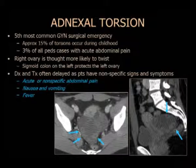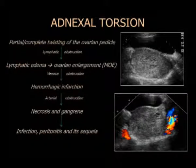Pasaremos ahora a la torsión. Lamentablemente es la quinta emergencia en ginecología. El problema es que se retrasa la presentación clínica, hay retraso en el diagnóstico radiológico, y frecuentemente ya hay un infarto cuando llegan al quirófano. Se cree que el ovario derecho tiene más tendencia a sufrir torsión. A la izquierda se cree que el colon sigmoide estaría por encima de los anexos y protege contra la torsión. Estas pacientes llegan con náuseas, vómitos, fiebre y elevación de leucocitos. Fisiológicamente hay torsión parcial o completa del pedículo que explica la obstrucción linfática y el edema, permitiendo el agrandamiento ovárico masivo (MOE).